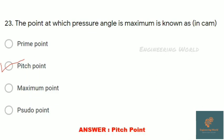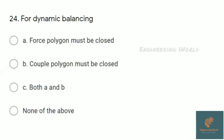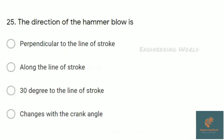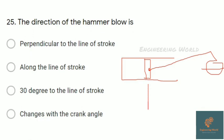For dynamic balancing, we have two conditions: force polygon and couple polygon must be closed. The next question: the direction of hammer blow is? Here's the simple arrangement of piston cylinder. This is the piston and it is rotating. Hammer blow means the force is acting perpendicular to the line of stroke.